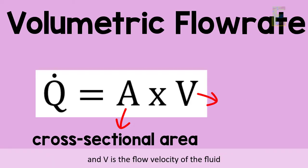V is the flow velocity of the fluid. So now let's have this problem: compute the volumetric flow rate of fluid passing through a tube.